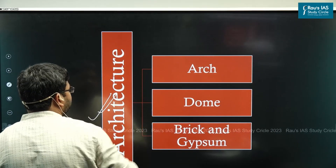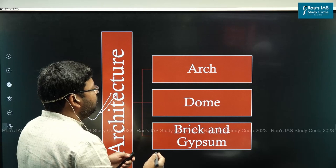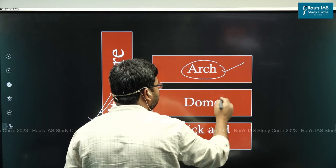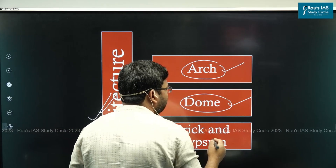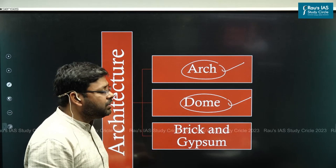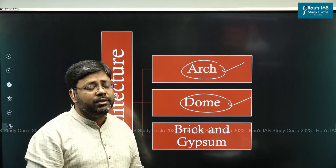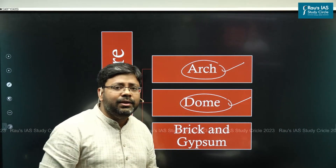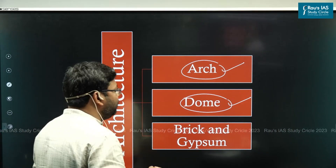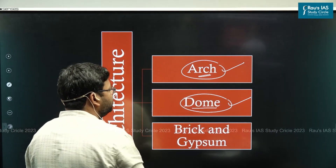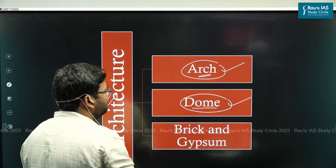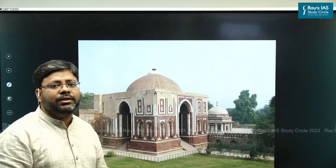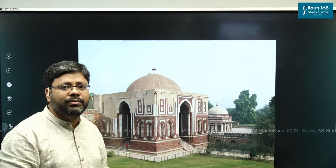If we talk about the field of architecture, the Muslim rulers for the first time in India introduced the scientific technique of making arch and dome. When you talk about dome-like structures, even Stupas were dome-like structures but they were not scientific domes because they were filled from inside. The first scientific technique of dome and arch construction was introduced during the Delhi Sultanate period. A perfect example is Alai Darwaza, constructed by Allauddin Khalji, located in Delhi just nearby Qutb Minar.